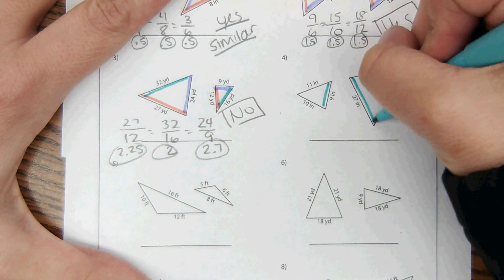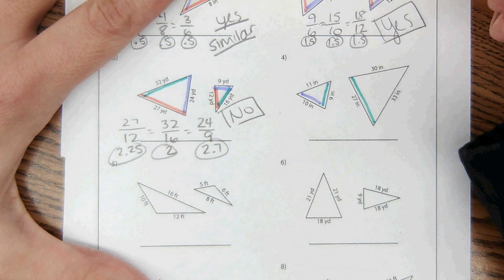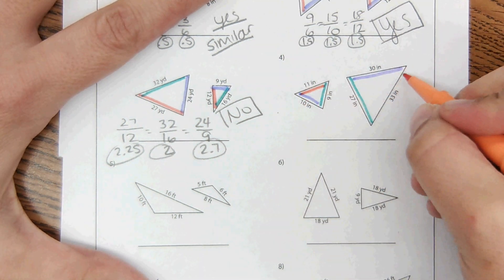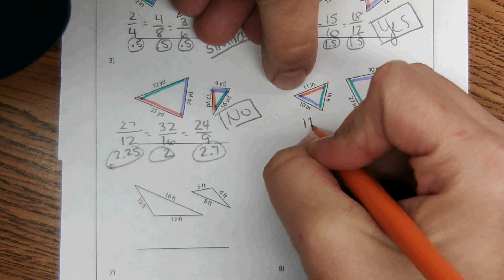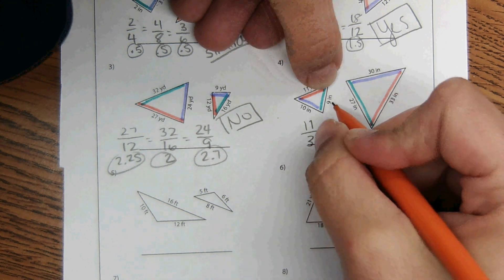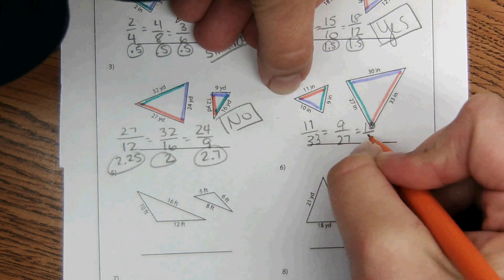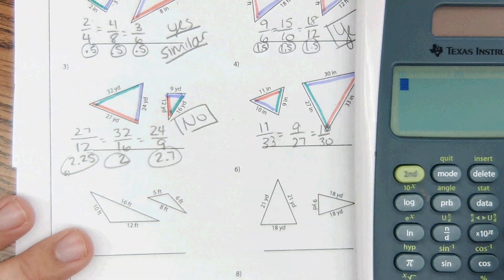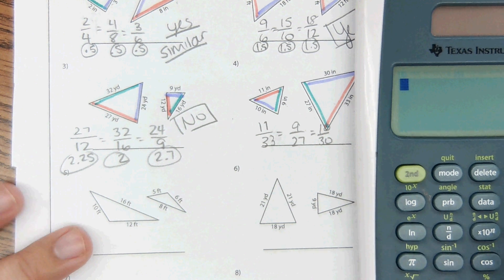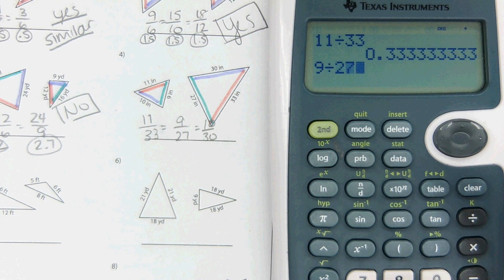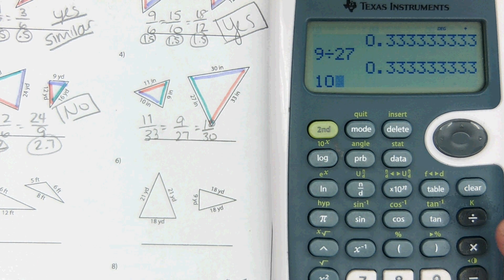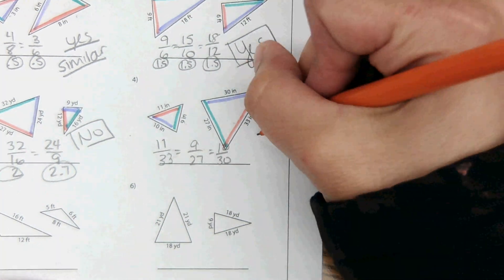Number 4. Short to short. And medium to medium. And long to long. Orange to orange, then teal to teal, and purple to purple. And in the calculator, 11 divided by 33, 9 divided by 27, and 10 divided by 30. It all comes out to the same thing, so this one, yes, similar.